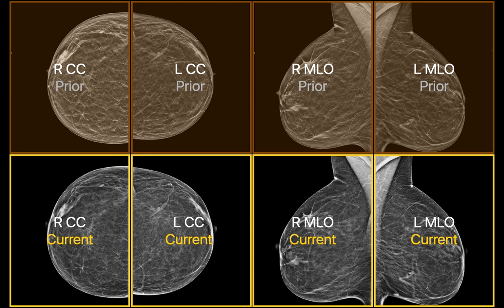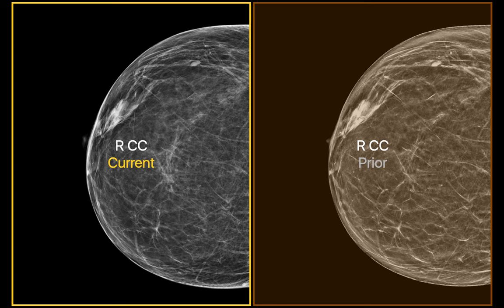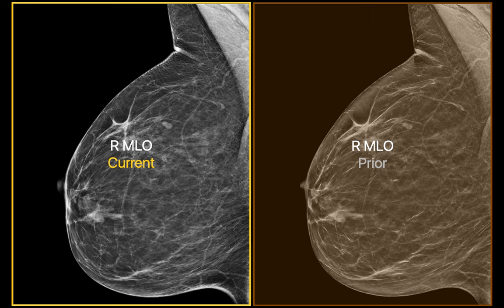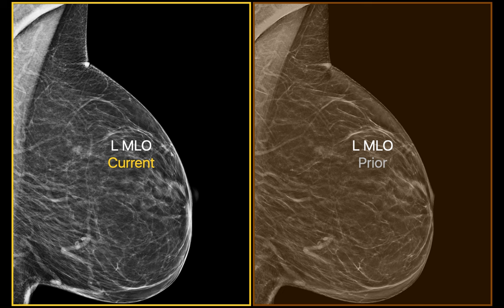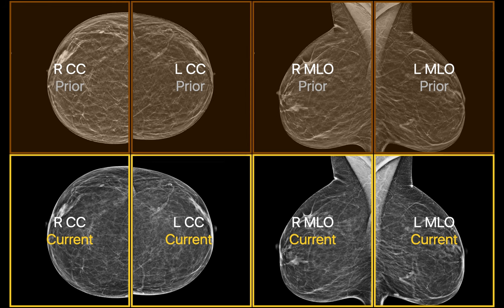Here's how it might work. A panorama of 8 2D mammography images is presented: prior CC views of both breasts and prior MLO views of both breasts along the top row, and current CC views of both breasts and current MLO views of both breasts along the bottom row. Each of the 4 current views are then viewed full size with the same view of the same breast from prior displayed next to it, starting with a right CC view, then a left CC view, then a right MLO view, and finally a left MLO view. The radiologist returns to the panorama and is free to go back and inspect any of these images again as they choose.